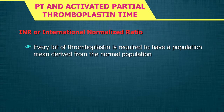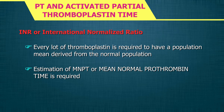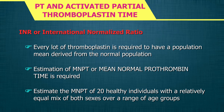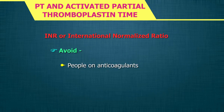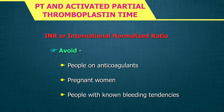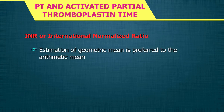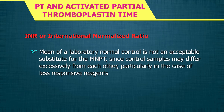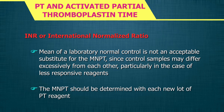Every lot of thromboplastin is required to have a population mean derived from the normal population; for this, an estimation of MNPT (mean normal prothrombin time) is required. A laboratory can estimate the MNPT from a minimum of 20 healthy individuals with a relatively equal mix of both sexes over a range of age groups. People on anticoagulants, pregnant women, and those with known bleeding tendencies should be avoided. A geometric mean is preferred to the arithmetic mean. MNPT samples must be fresh, and MNPT should be determined with each new lot of PT reagents.